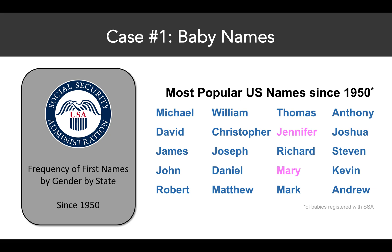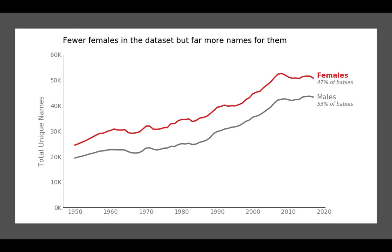This had me wondering where are the female babies. Well, if you look across the entire data set, there are fewer females than males, but there are far more names given to female babies in the data set. Tracing over time from 1950 onward and tallying up the total number of unique names given to each gender, we find that there are just more names given to females every single year than males.